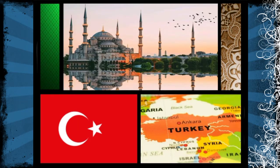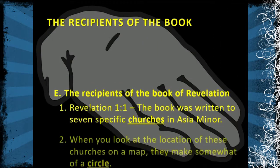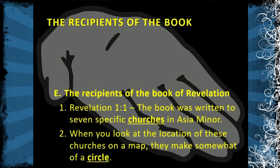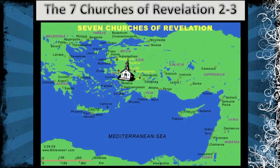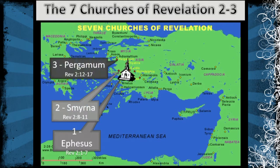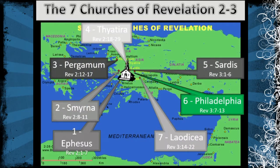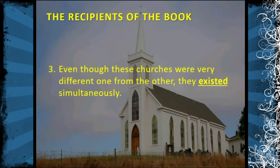Asia Minor is the modern-day place of Turkey. When you look at the location of these churches on a map, they make somewhat of a circle — they're actually pretty close together, though in ancient times it would have been far. The seven churches are: Pergamum, Smyrna, Ephesus, Thyatira, Sardis, Philadelphia, and Laodicea.